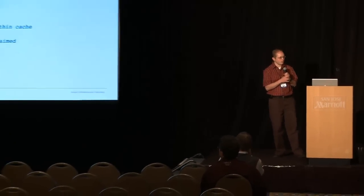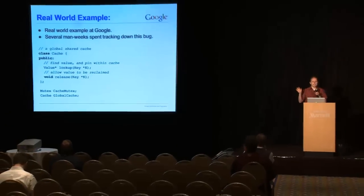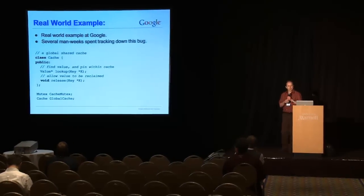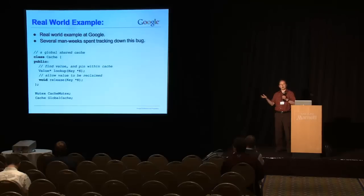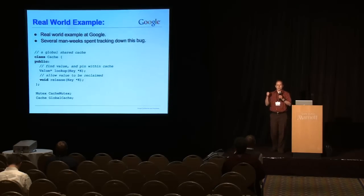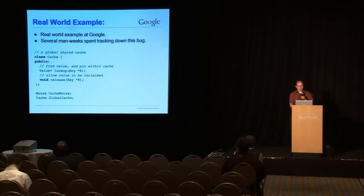So here's a real-world example. This is a bug that appeared in the Google code base, and several man weeks were spent tracking down this bug. So there's going to be multiple slides. The first bit is we implement a cache, and this cache allows you to look up a value, and once you've looked up the value, that value is pinned within the cache until you release the value.